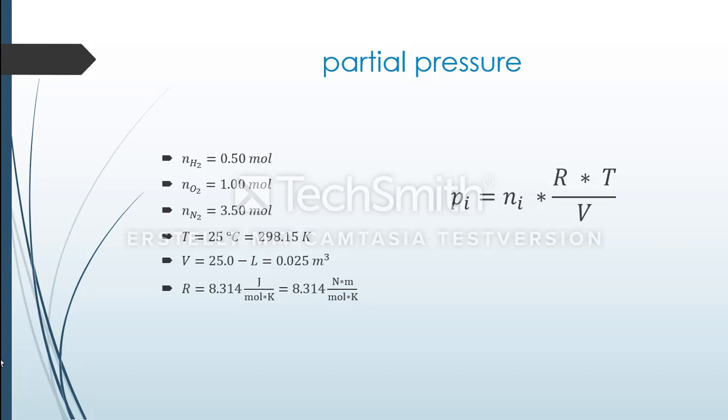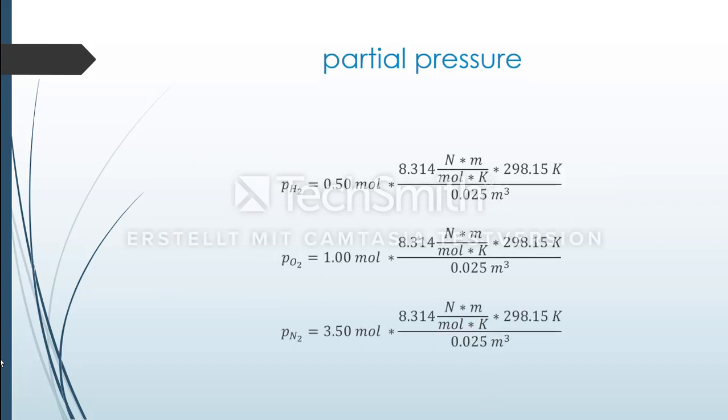If we apply these data in the formula, we receive these three calculations. This allows us to cancel units of mole, Kelvin, and meter, and leaves us with the unit of N per square meter.